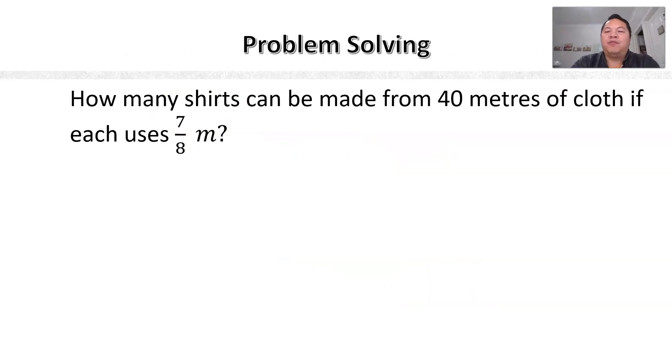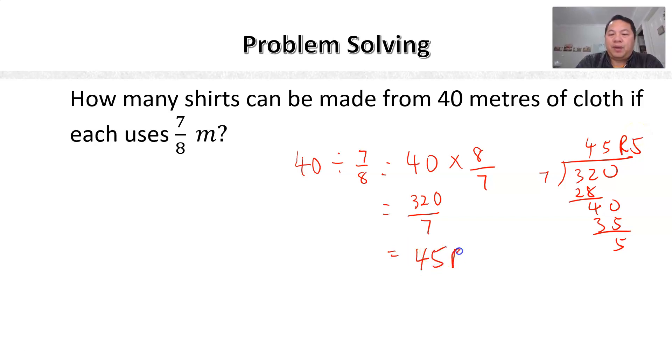Problem solving. How many shirts can be made with 40 meters of cloth if each uses 7/8? Seems like it's a division question, isn't it? So it's actually simply 40 meters divided by 7/8 meters, which is 40 times 8 over 7. So there's no way I can cancel. This is 320 divided by 7, which is 320 divided by 7 is 45 remainder 5. So in other words, this is actually 45 remain the 5. So to make the number of shirts, the exact number of shirts, you can only make 45. Because the remaining part, you can't make another shirt with it. So you can make 45 shirts.